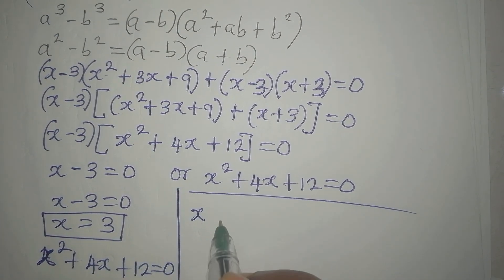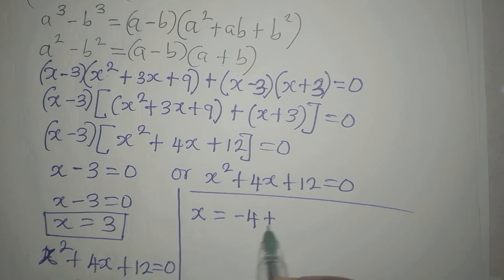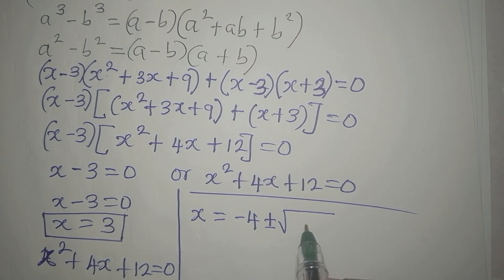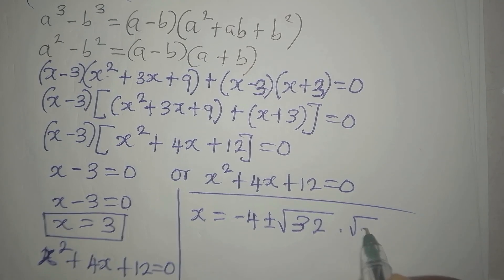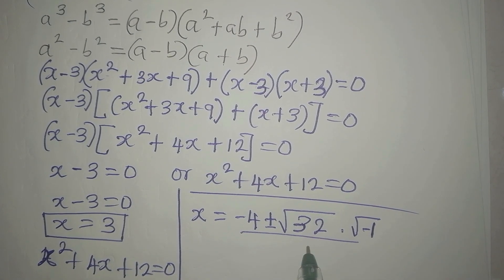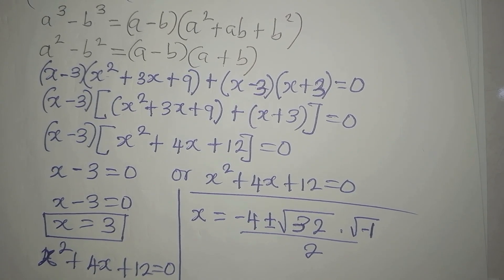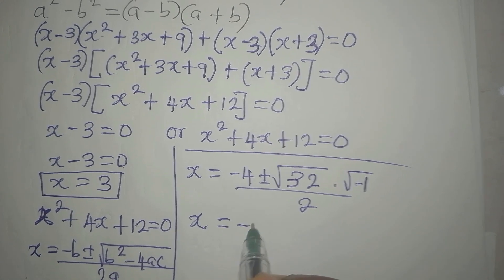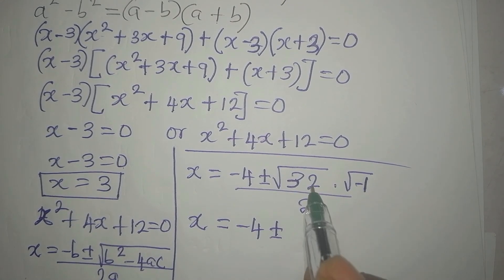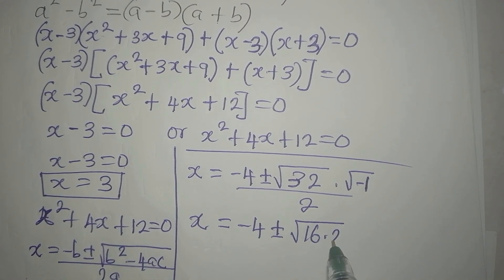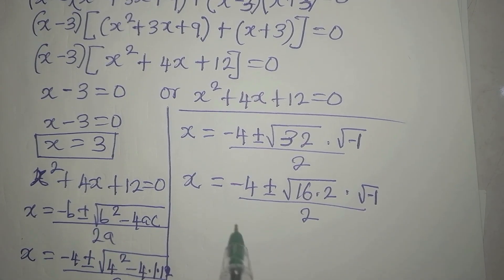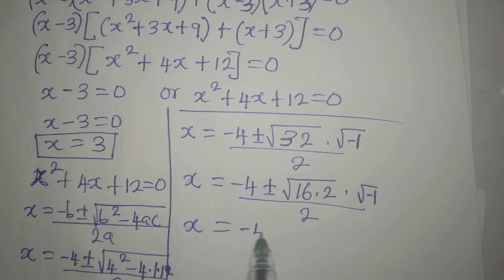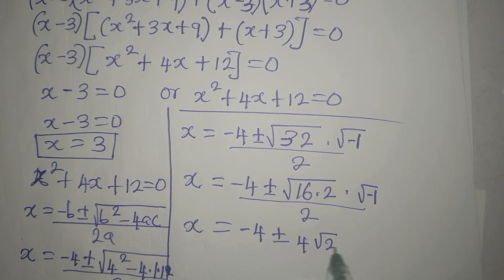So our x will be equal to minus 4, plus or minus the square root of minus 32. Now minus 32 can be written as 32 times negative 1, and the square root of negative 1 is i. Going further, 32 is 16 times 2, so we have the square root of 16 times 2 times i, all divided by 2. The square root of 16 is 4, so we get minus 4 plus or minus 4 times root 2 times i, divided by 2.